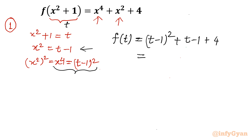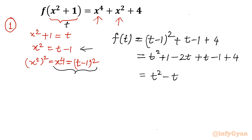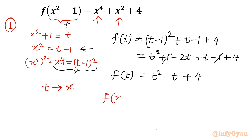Expanding (t − 1)² using (a − b)² = a² + b² − 2ab gives t² − 2t + 1. Adding t − 1 + 4: combining −2t + t gives −t, and +1 − 1 cancels, leaving only +4. So f(t) = t² − t + 4. Now using change of variable, replacing t with x, we get f(x) = x² − x + 4. Simple and easy.